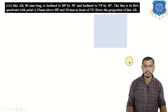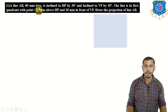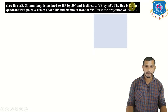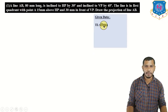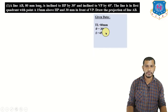Now let's start with the first problem. A line AB 80 mm long is inclined to HP by 30 degrees and inclined to VP by 45 degrees. The line is in the first quadrant with point A 15 mm above HP and 30 mm in front of VP. Draw the projection of line AB. So the true length is 80 mm, theta is 30 degrees, and phi is 45 degrees.